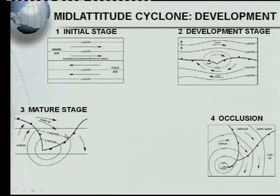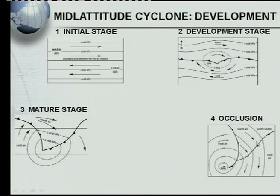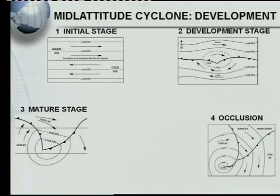A few hours later, you will have the mature stage of the mid-latitude cyclone. Now for the first time you can really identify your cold front and your warm front. Here we've got our warm air on this side, and the cold air at the bottom. In other words, we will have the warm front on that side and the cold front on this side. The final stage would be the occlusion — when the cold front moves towards the warm front, this warm section getting narrower and narrower until both fronts are occluded. That is what we call the occlusion stage.